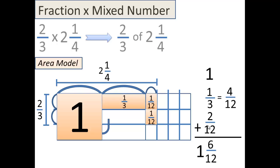Yeah, it's 1 and 6/12, which many of you can reduce in your head down to 1 and 1/2. So 2/3 of 2 and 1/4 is 1 and 1/2. That's the area model way.